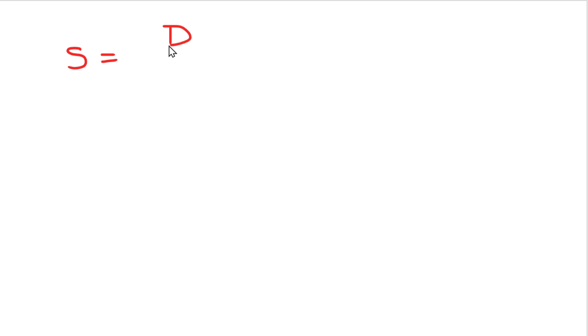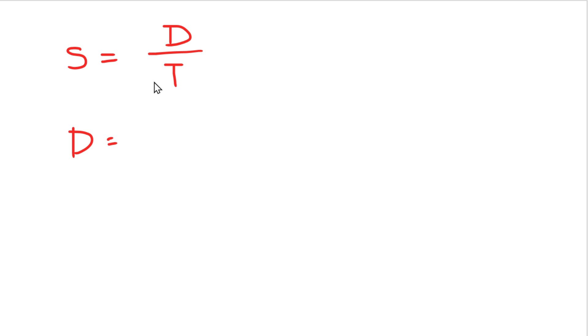Speed is distance by time. Distance by time — that is the formula for speed. Distance is speed multiplied by time. The formula for distance is obviously speed times time. Speed is distance divided by time. By 2 hours, the speed goes on.